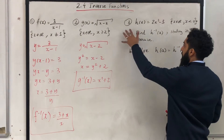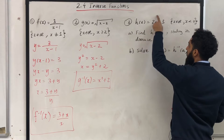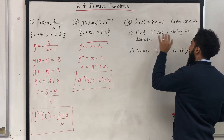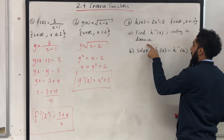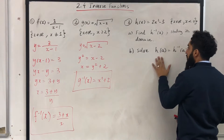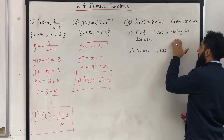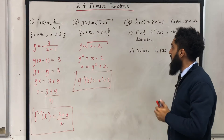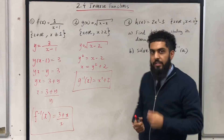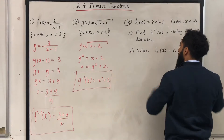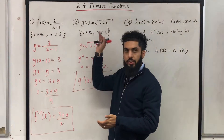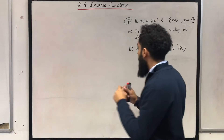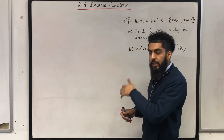Let's move on to question number three. I've got h of x equal to x squared minus 3 for this given domain. Part A, I want to find the inverse function of h of x stating its domain. Part B, solve h of a equals inverse h of a. This looks like a juicy question — I can't wait to tackle it. You have to be very specific with your answers, which you will see in due course.